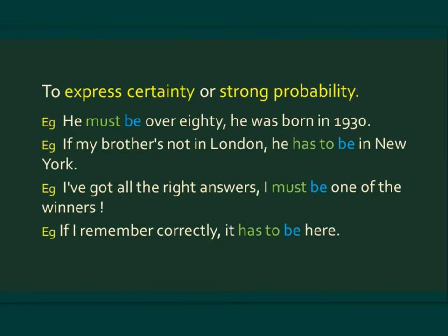We also use must or have to to express certainty or a strong probability. Example one: He must be over 80 — he was born in 1930. Example two: If my brother's not in London, he has to be in New York. Example three: I've got all the right answers, I must be one of the winners. Example four: If I remember correctly, it has to be here.